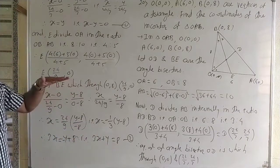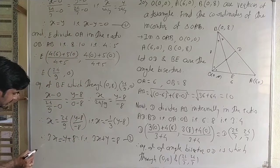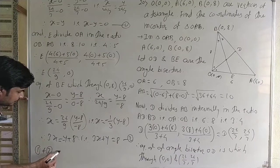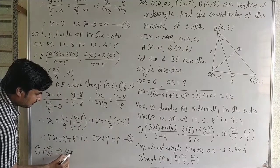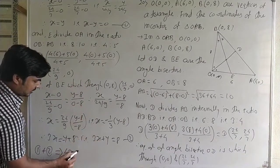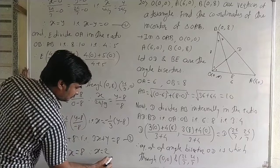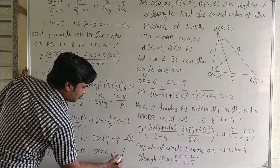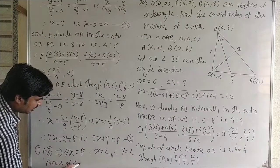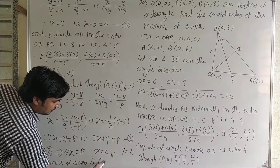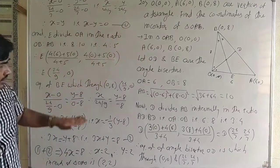To find the incenter, we find the point of intersection of the angle bisectors. Adding equations 1 and 2: from equation 1, x = y; substituting into 3x + y = 8 gives 3x + x = 8, so 4x = 8 and x = 2. Therefore y = 2 as well. The incenter of triangle OAB is (2, 2).